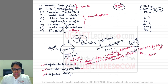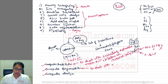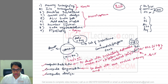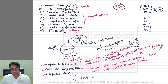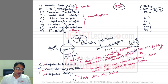Computer organization deals with various memory and I/O interfaces — how the various memory and I/O components interact with the system. Computer design deals with hardware design. Combined, all three of these topics together are called computer architecture and organization. Sometimes it is also named computer architecture and design, or computer organization and design.